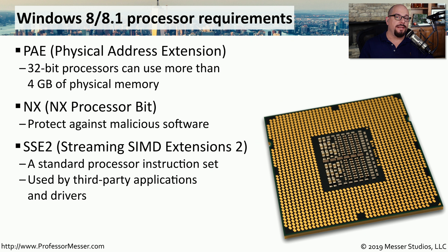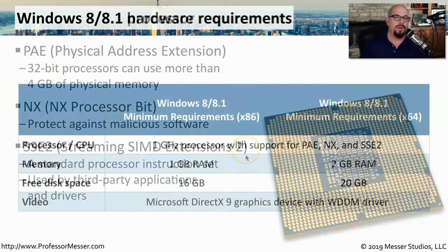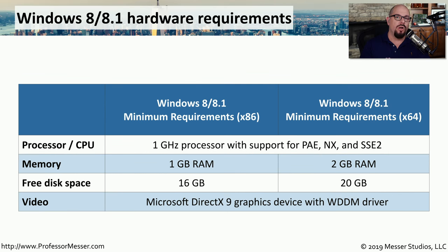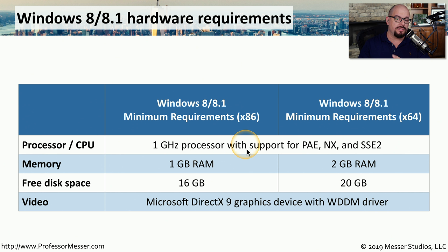The third CPU requirement is that the processor support SSE2, which stands for Streaming SIMD Extensions 2 — a processor instruction set used by application developers when creating drivers or apps for Windows 8.1. The hardware requirements for Windows 8 and 8.1 are almost identical to those of Windows 7. Both the 32-bit and 64-bit versions require a 1 gigahertz processor with support for PAE, NX, and SSE2.